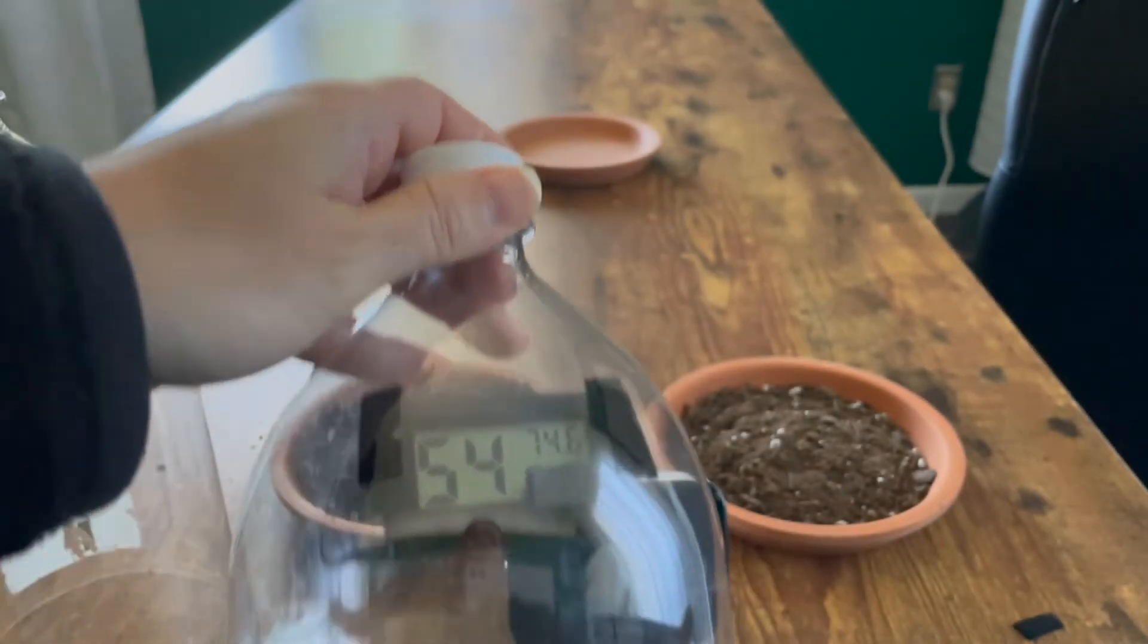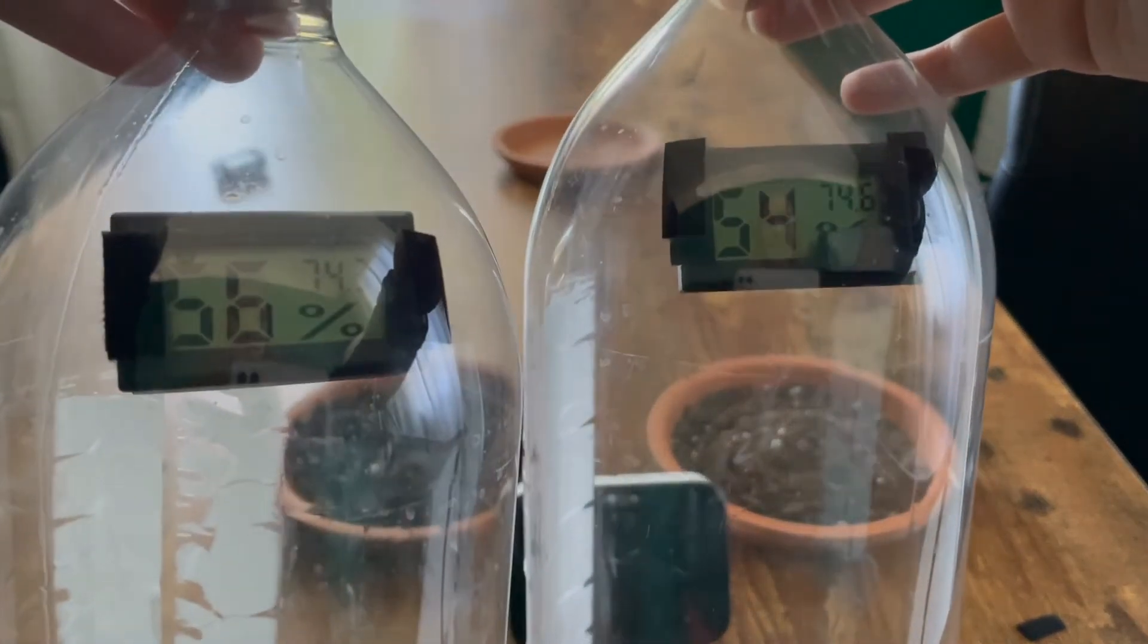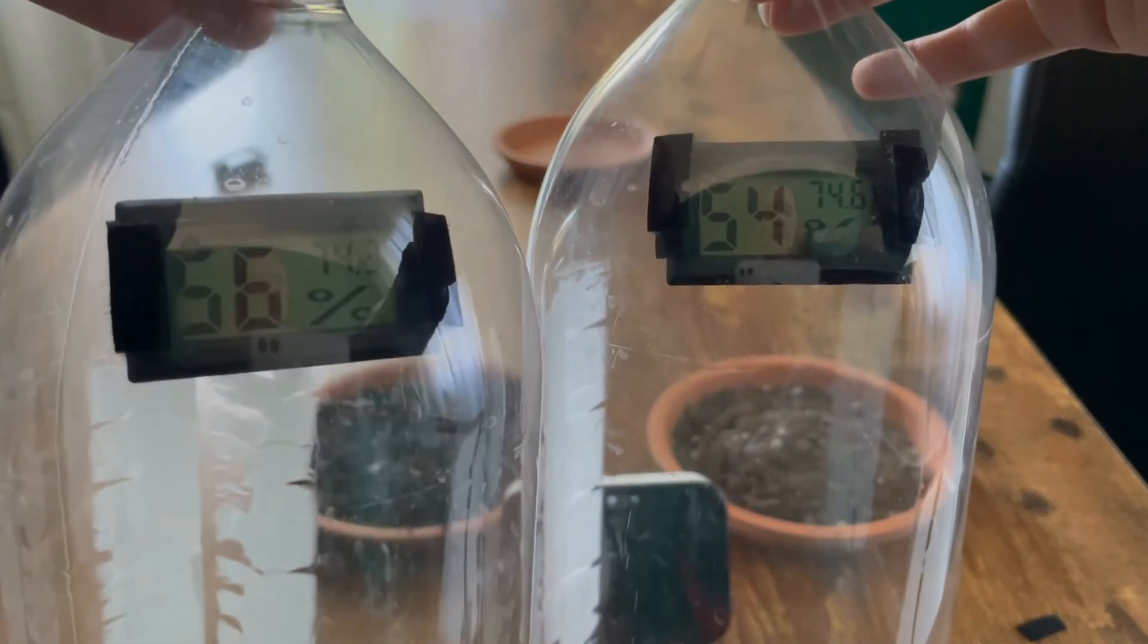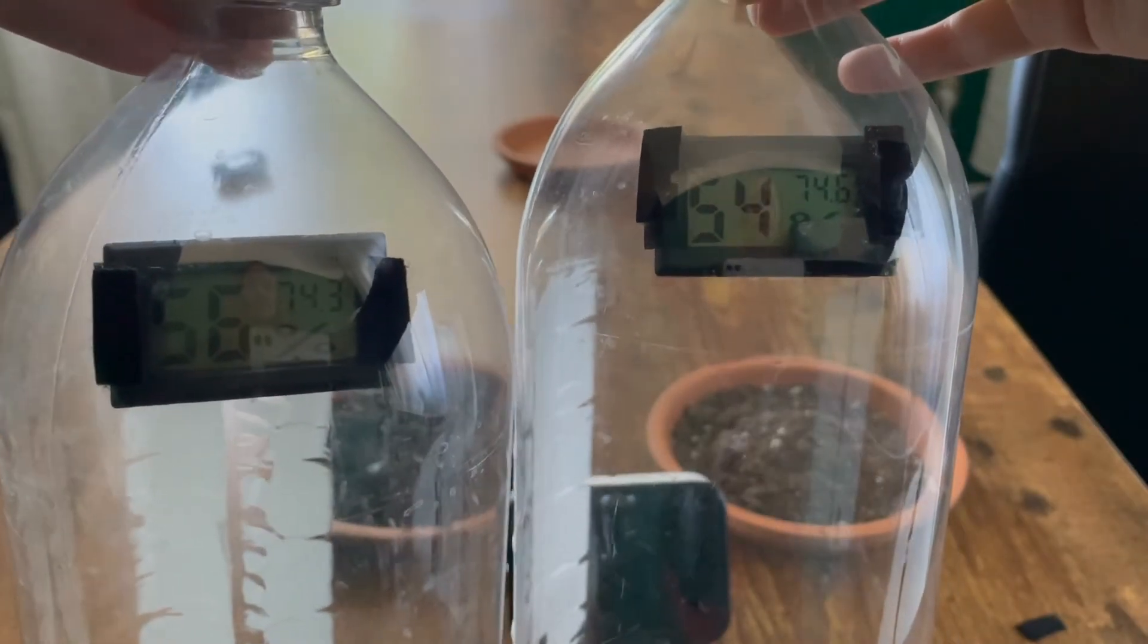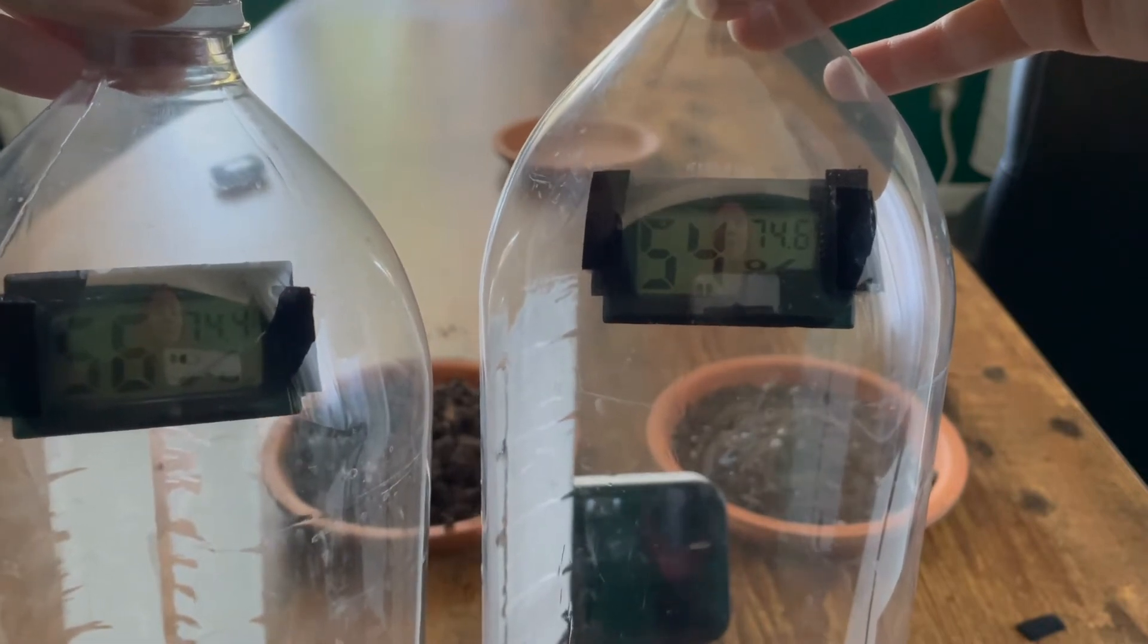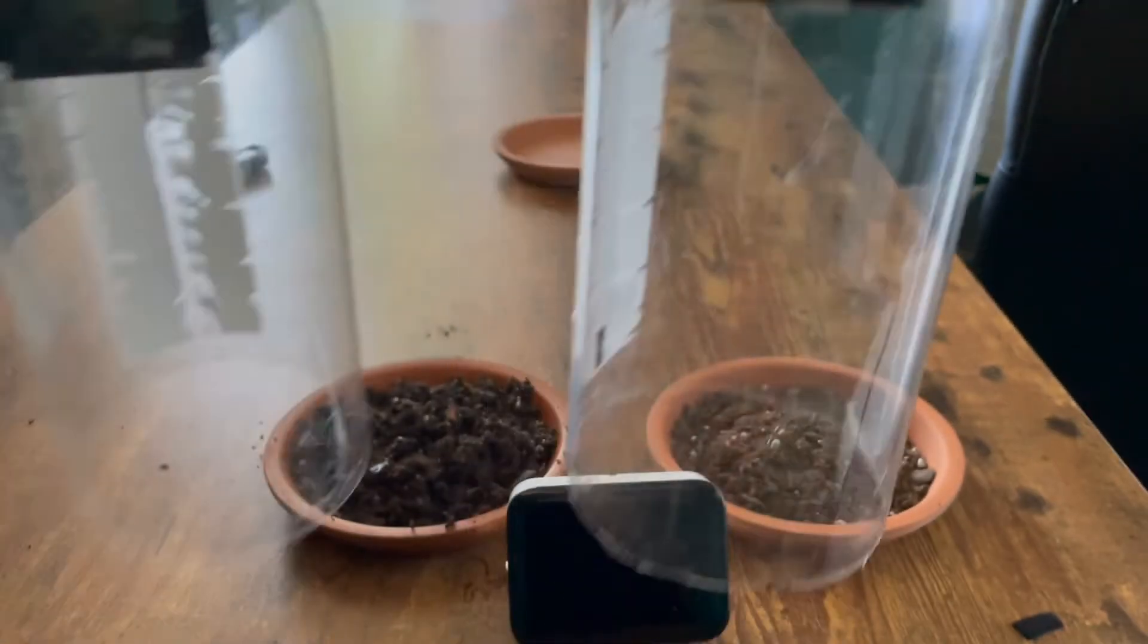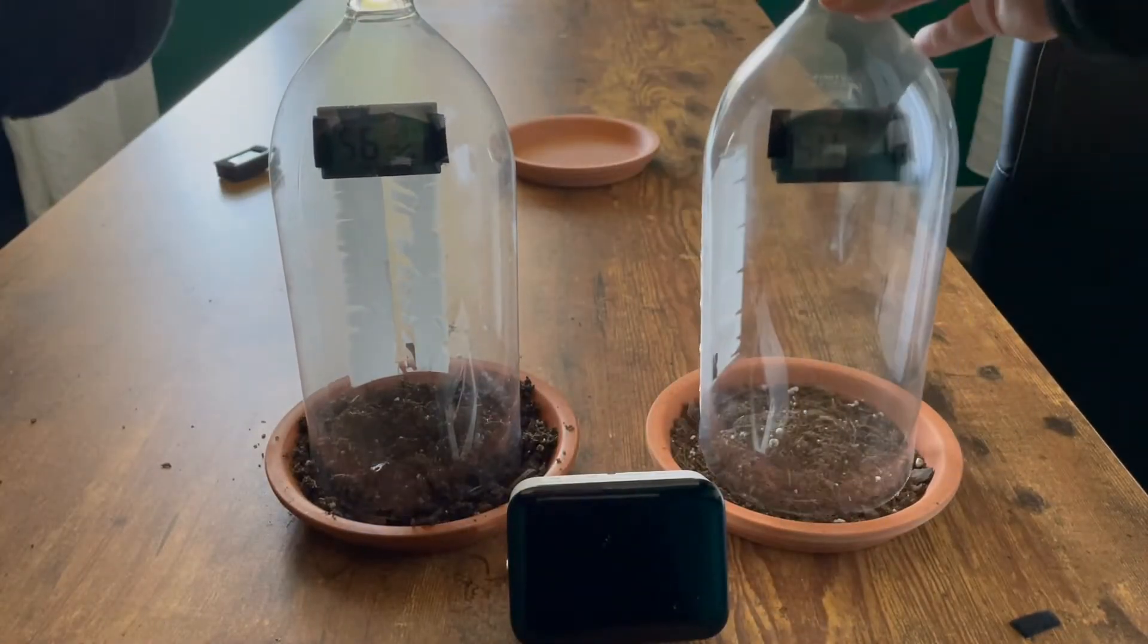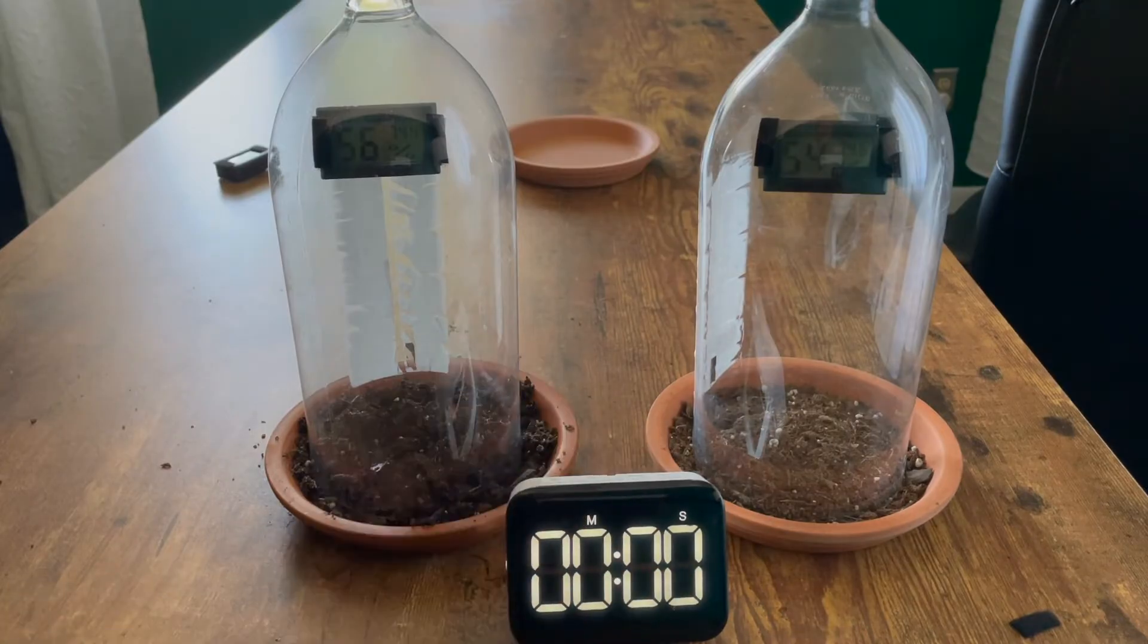Before we begin, we have our wet soil at 56, temperature 74.3, and our dry soil 54, temperature 74.6. We're going to place these on top and we'll start our timer.